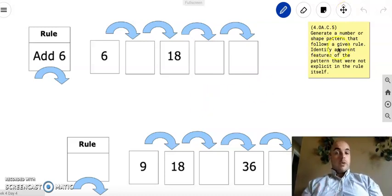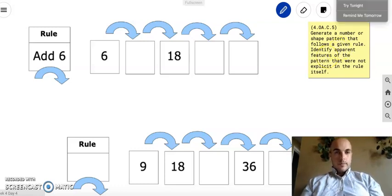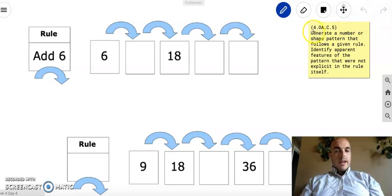Without further ado, let's get into it with our objective and then our first couple examples. So, our standard is 4.OA.C.5, and our objective is to generate a number or shape pattern that follows a given rule. Identify apparent features of that pattern that were not explicit in the rule itself.